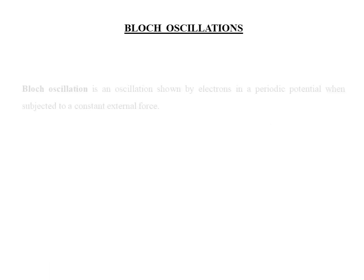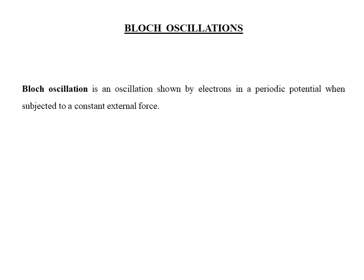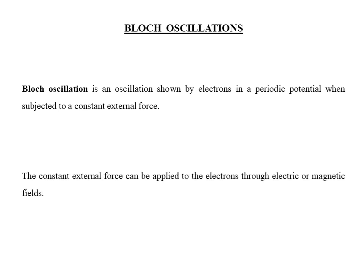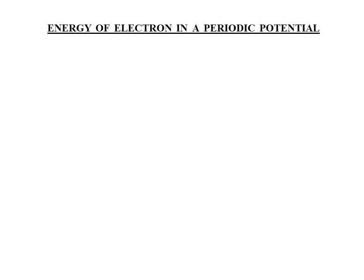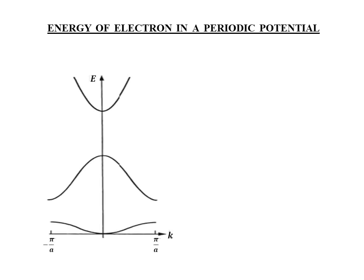Bloch oscillation is an oscillation shown by electrons in a periodic potential when subjected to a constant external force. The constant external force can be applied to the electrons through electric or magnetic fields. For an electron in a periodic potential, the energy varies with the wave vector k as shown in the figure. The figure is a reduced zone scheme of energy dispersion of an electron in a periodic potential. In this scheme, the energy dispersion is reduced to the first Brillouin zone, which is the region in k-space between minus pi by a and plus pi by a, where a is the lattice period or the lattice parameter of the crystalline solid.